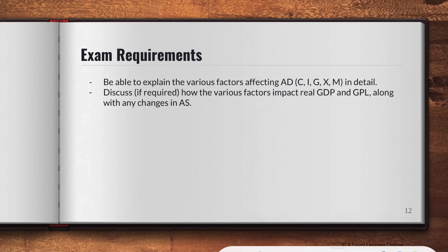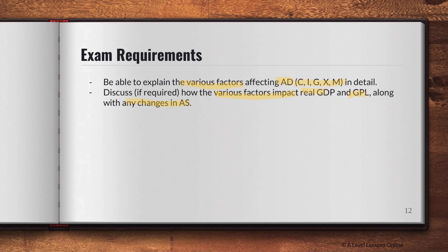For exam requirements, you need to explain the various factors affecting AD — C, I, G, X − M — which I've gone through in detail. After that, if required, discuss how the various factors impact real GDP and GPL, along with any changes in AS. This is always tied to your macro goals. This video is a concept video for you to understand how aggregate demand works and how AD is affected by C, I, G, X, and M. In the next part, I'll go through aggregate supply.